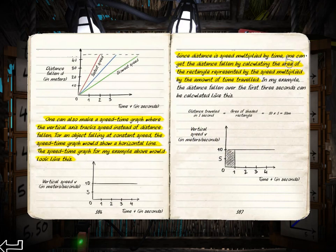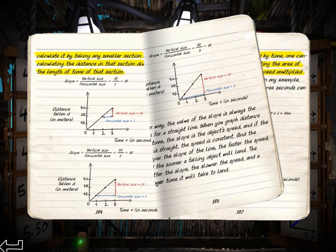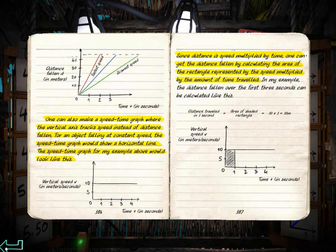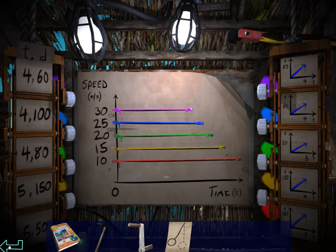Hopefully I won't have to look up the solution to this puzzle like I did in the previous video. One can also make a speed-time graph where the vertical axis tracks speed instead of distance. For an object falling at a constant speed, the graph would look something like this. Since distance is multiplied by time, one can get the distance by figuring out the area. Gotcha. Let's see if I can get this — I think I understand that.